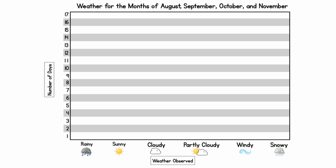Down on the bottom of the graph it shows us the different types of weather we might see: rainy, sunny, cloudy, partly cloudy, windy, and snowy. Going up on the left side, it has numbers — each number represents one day that we've had a specific type of weather. Today is a sunny day, so we're going to draw a sun above sunny — one sunny day of weather.